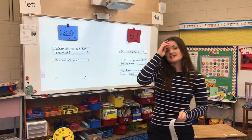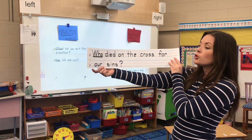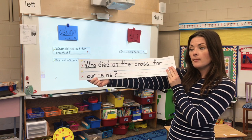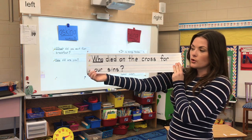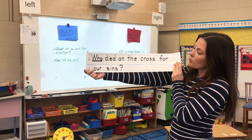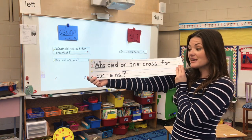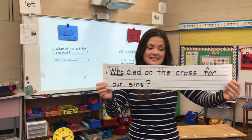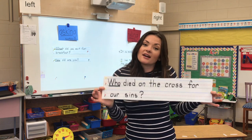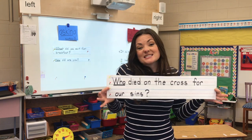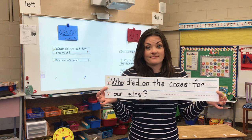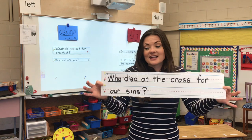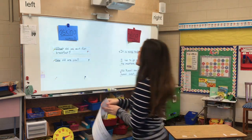This is our last sentence strip. It says, 'Who died on the cross for our sins?' It starts with the word 'who' and ends with a question mark. That tells me this is asking us a question, so it is an asking sentence. Now you answer this question for me — who died on the cross for our sins? What did we just celebrate this last weekend? Easter — which means our answer is Jesus. Jesus died on the cross for our sins. This is an asking sentence.